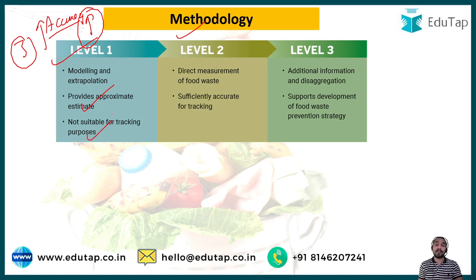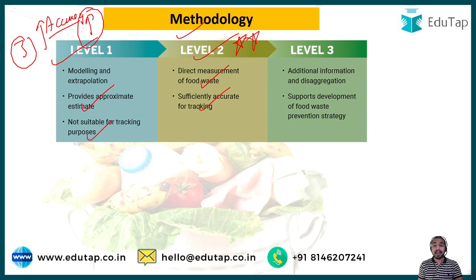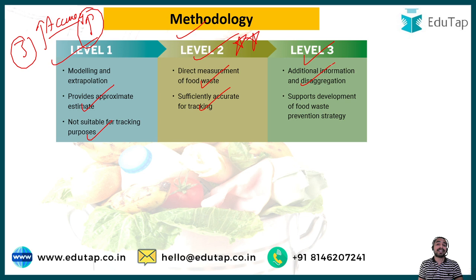Level two is the recommended approach as per the index because it uses robust methodologies to track actual food waste generated in a nation. National studies are conducted to track national food waste generation levels, providing direct measurement that is sufficiently accurate for tracking purposes. Level three is used to inform policy and other interventions, comprising additional information and disaggregated data related to edible parts, manufactured food loss, or other specific parameters, supporting the development of food waste prevention strategies.